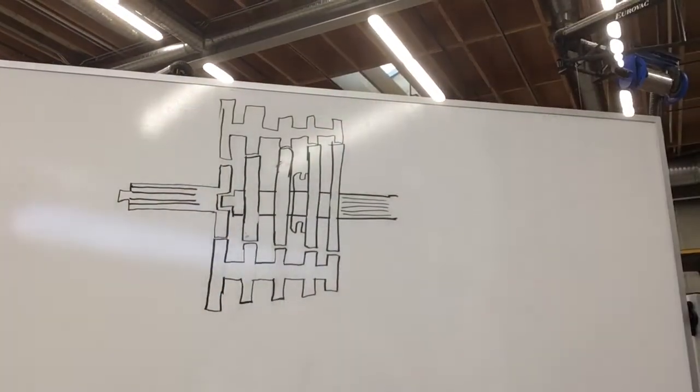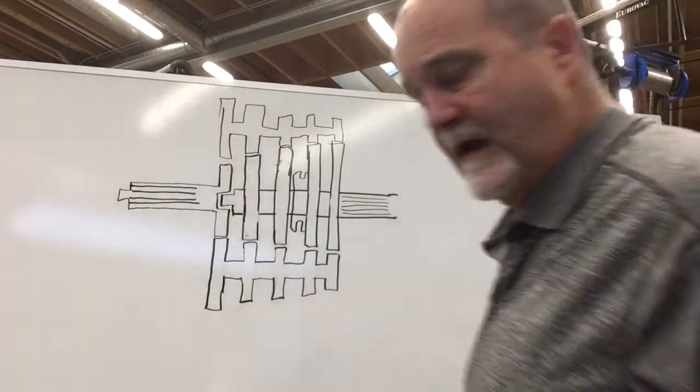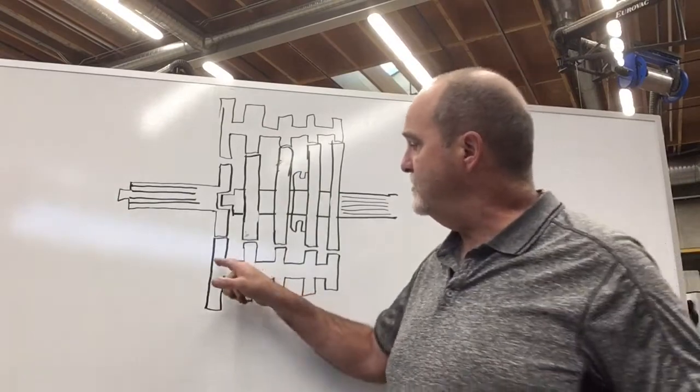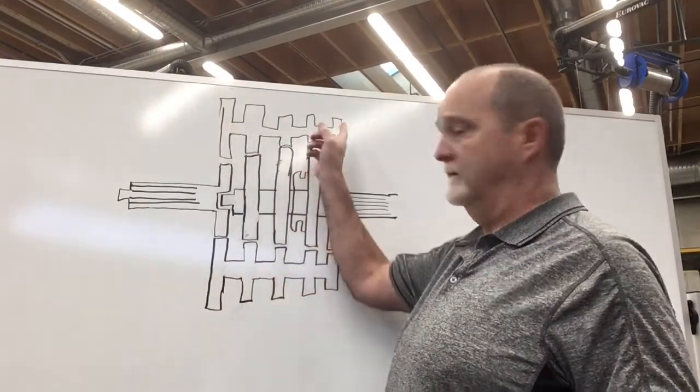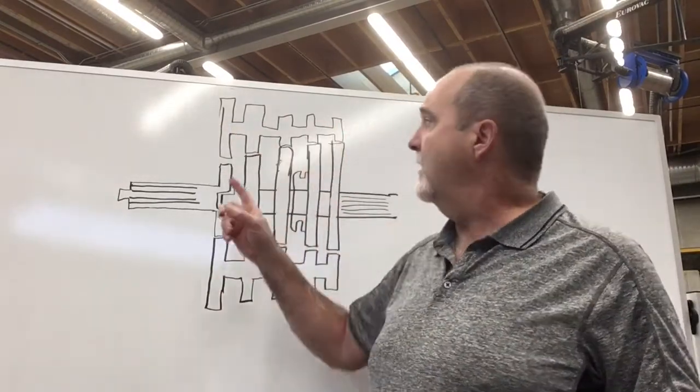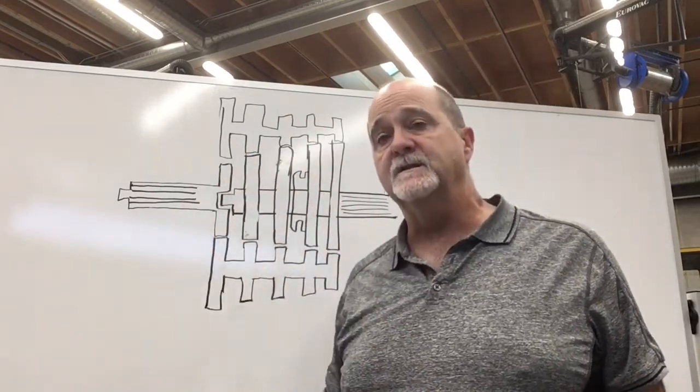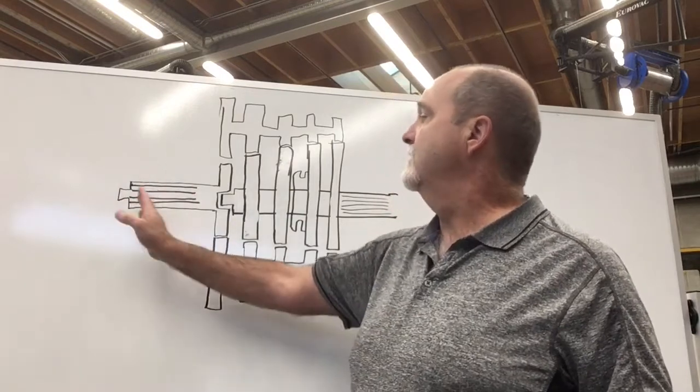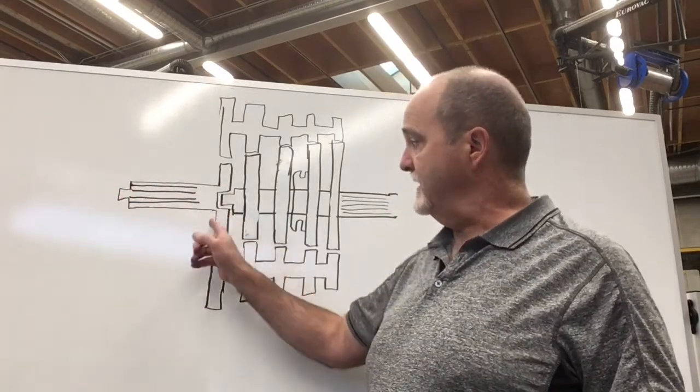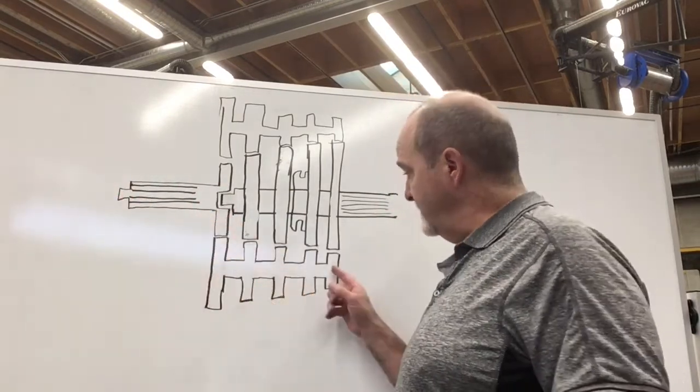So once we come into our transmission we have constantly meshed to our counter shafts here and here. The counter shafts are going to be always turning as long as that clutch is engaged. The clutch is engaged. We are now full power coming into this transmission turning all of these.